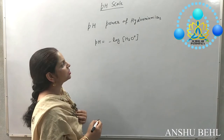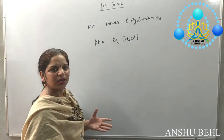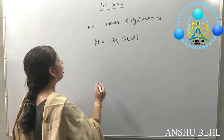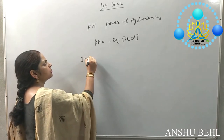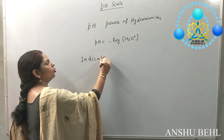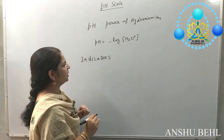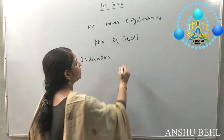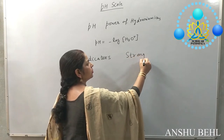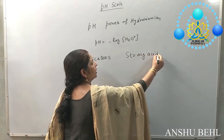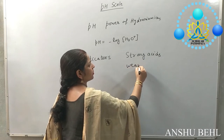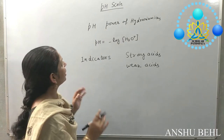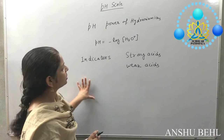The pH scale tells you whether a substance is a strong acid, strong base, weak acid, or weak base. We have many indicators that tell you whether a substance is acidic or basic, but what about the strength of that acid or base? How can we distinguish between strong and weak acids using the pH scale? This is today's concept.